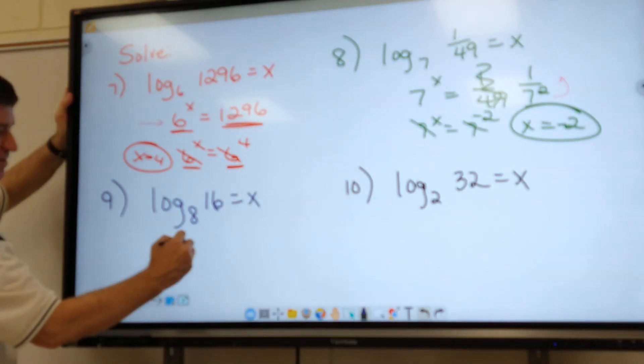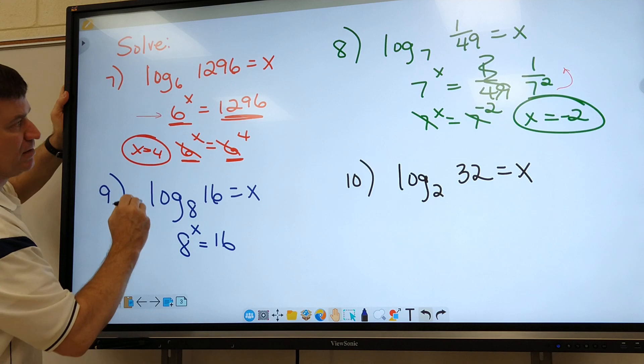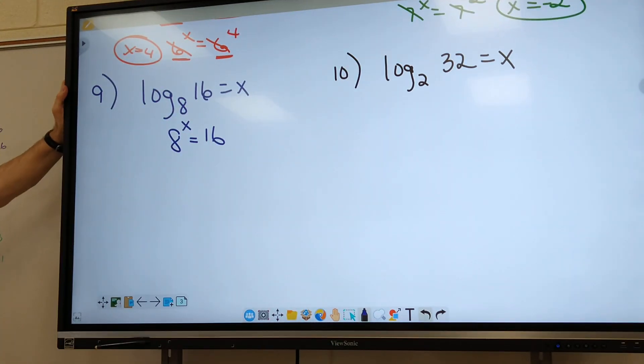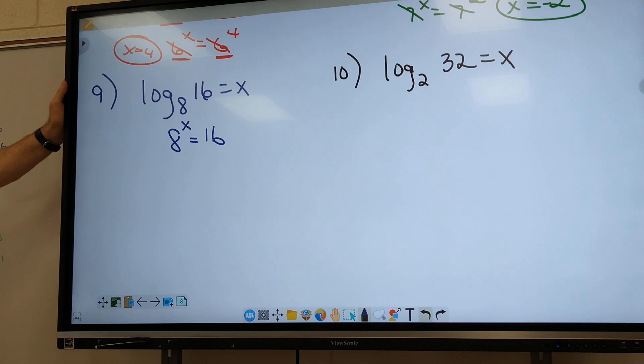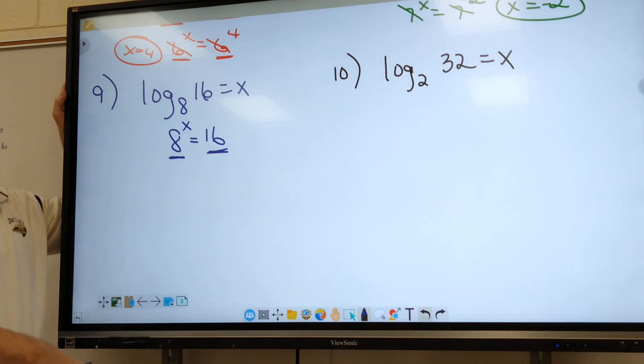All right, so it's going to be eight to the x power equals 16. That's just memorizing how to go from log form into exponent form. All right, and I think we did this same problem the other day. I got to do something a little bit different on this one. You got to break both of them down. How do you know? Because you can't do eight to some power and get 16, right?